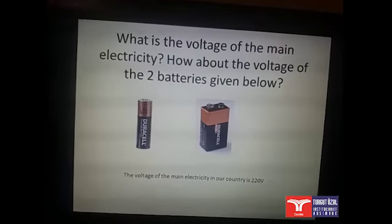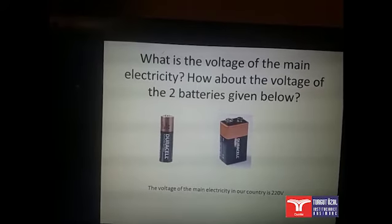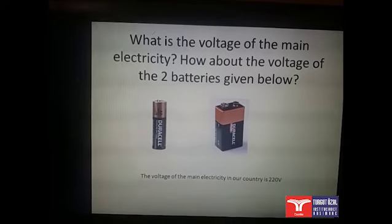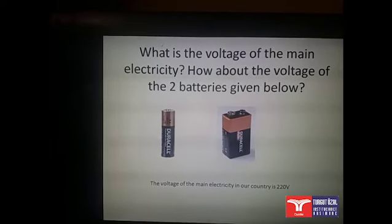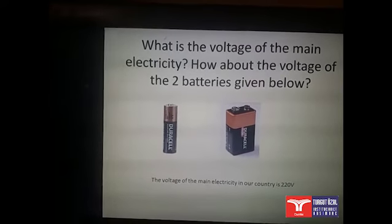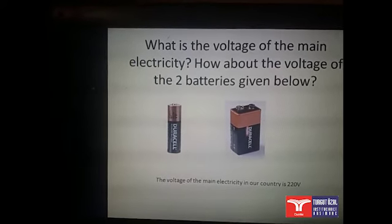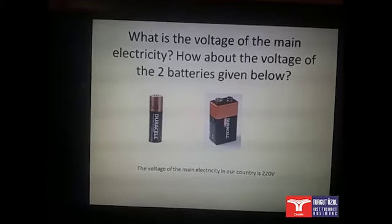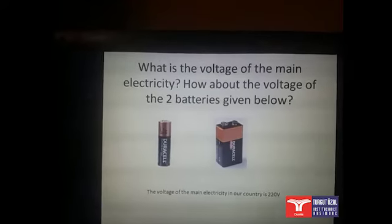What is the voltage of the main electricity? And how about the voltage of the two batteries given? The voltage that we use at our homes — you can know this from your parents — is 220V. The voltage produced by the two batteries: if you take a look at the pictures, the first battery has a voltage of 1.5V and the second one has a voltage of 9V. So there is a difference between the voltage of the main electricity and the voltage produced by the two batteries.